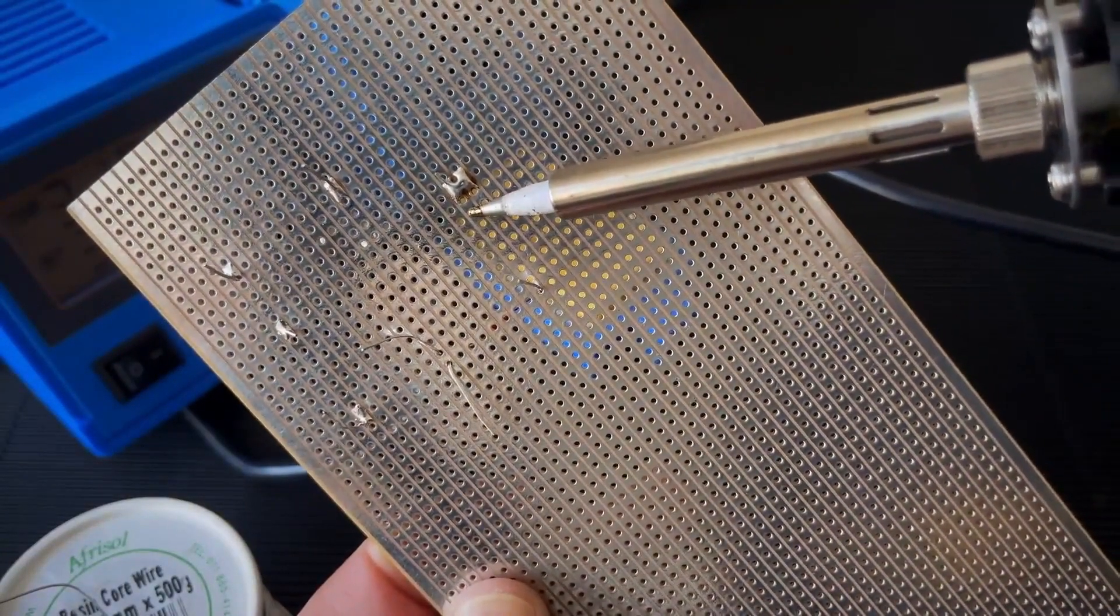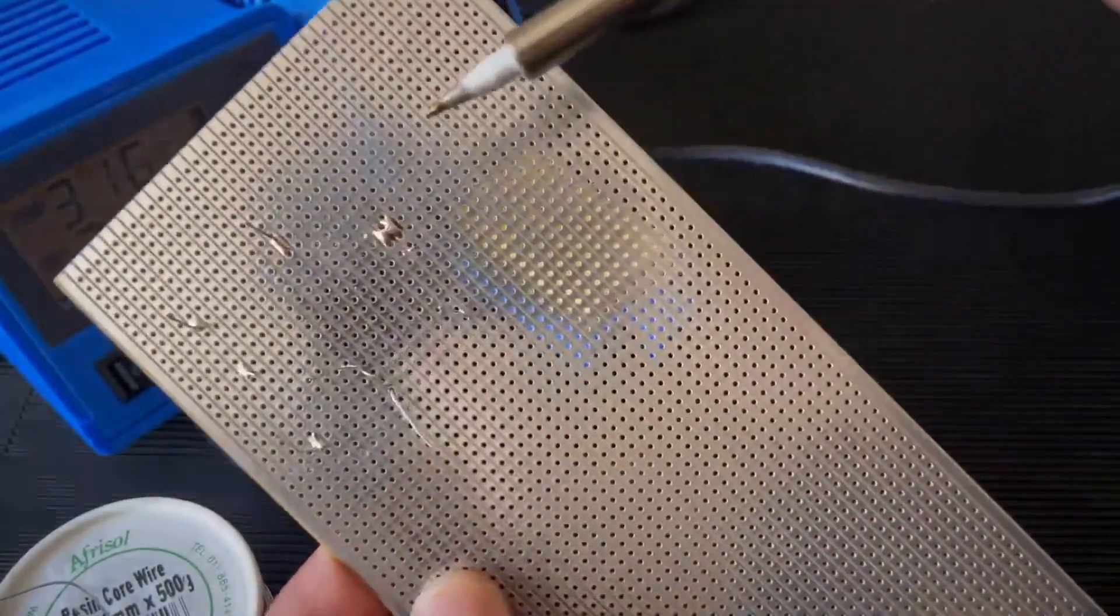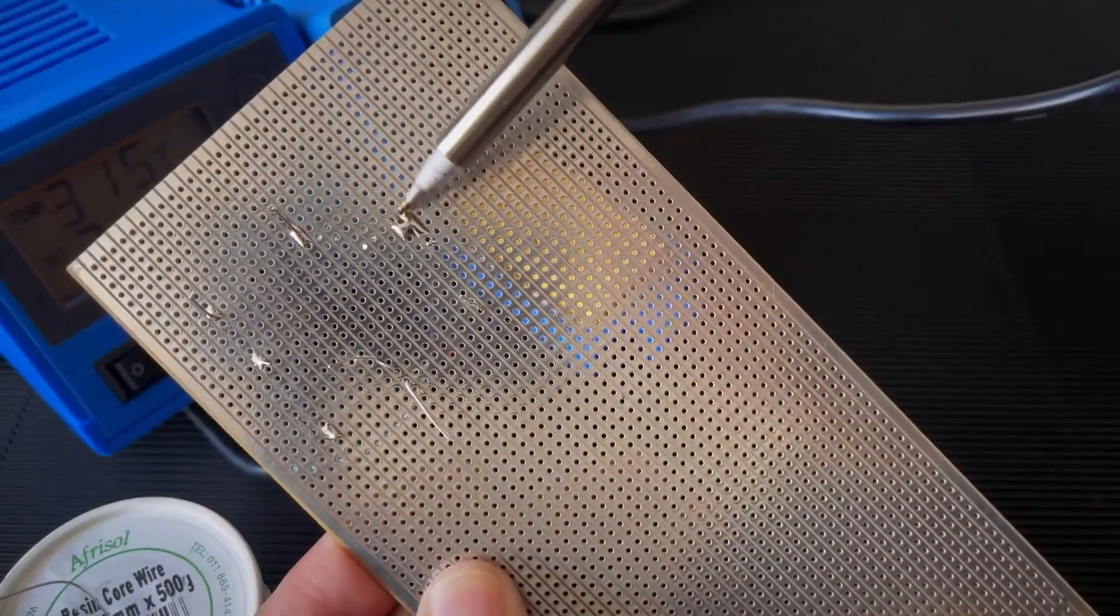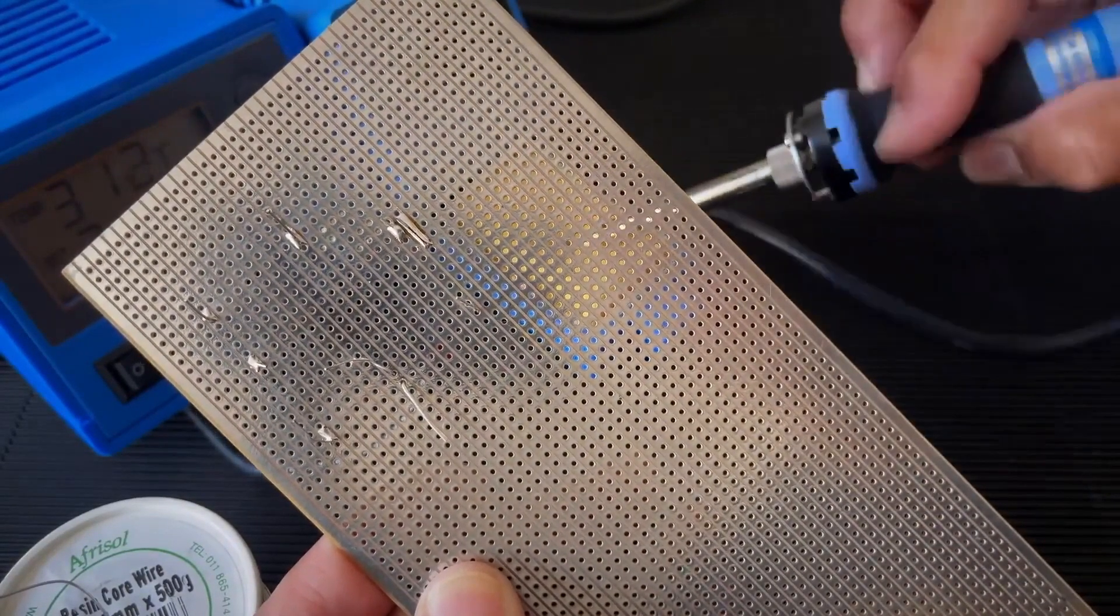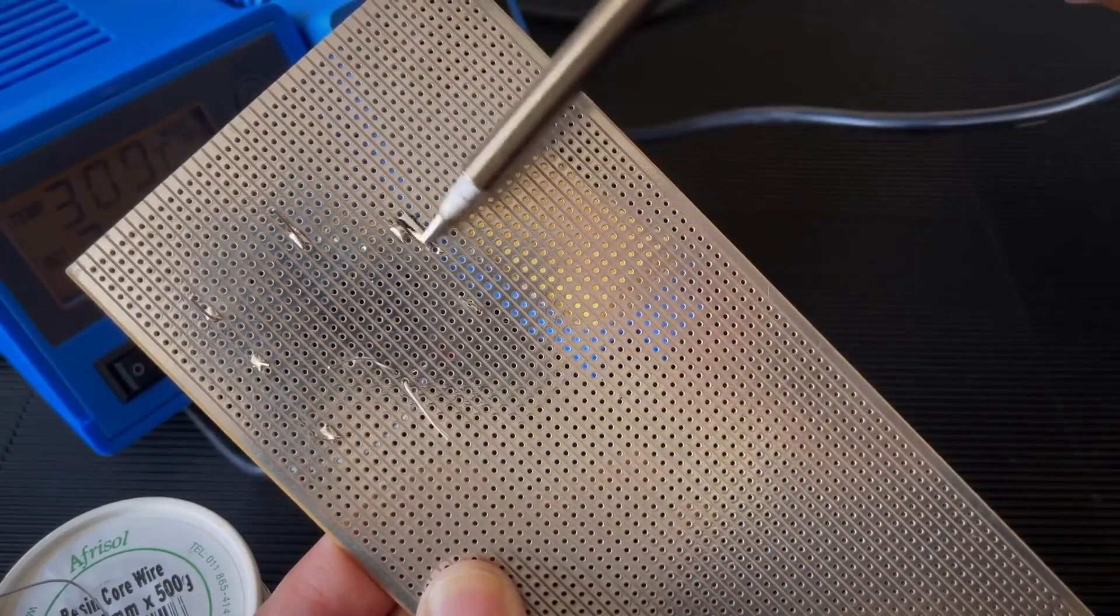And just a way to get rid of it is either with a solder sucker or this little technique. You just use the tip and almost like you're painting it or spreading it.